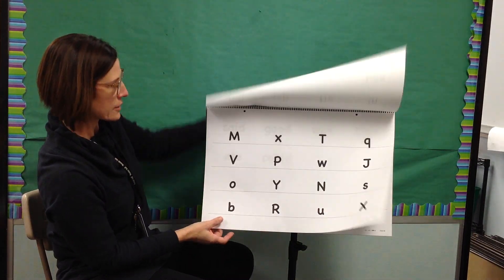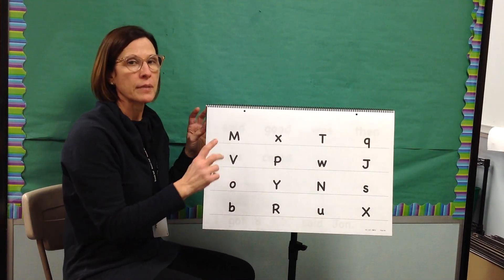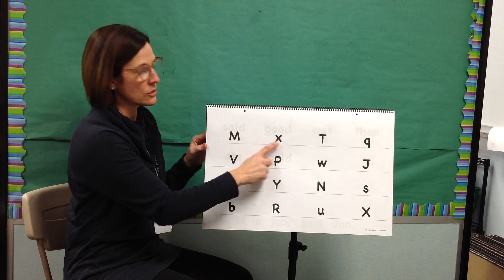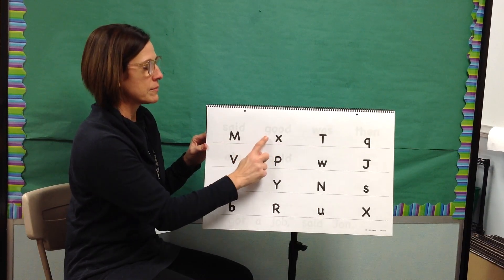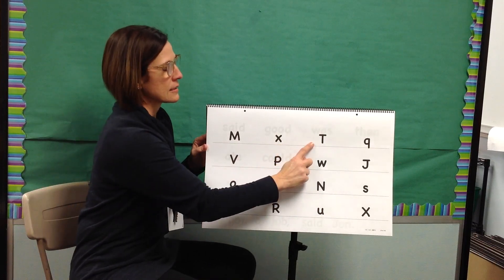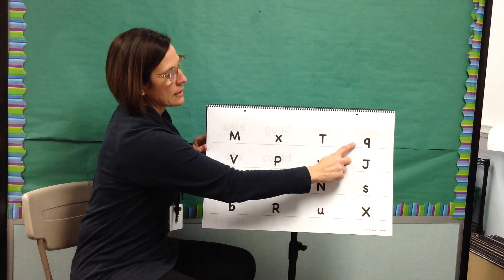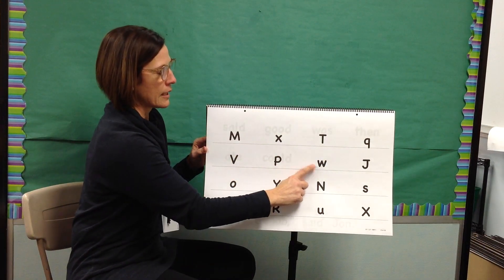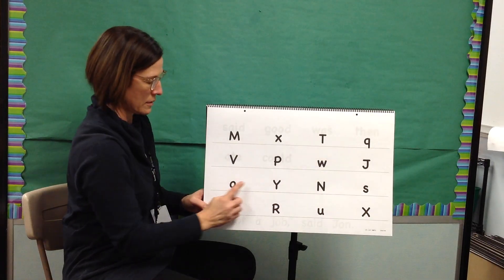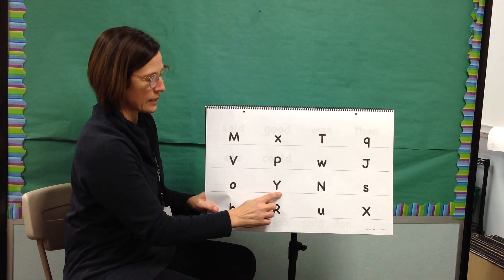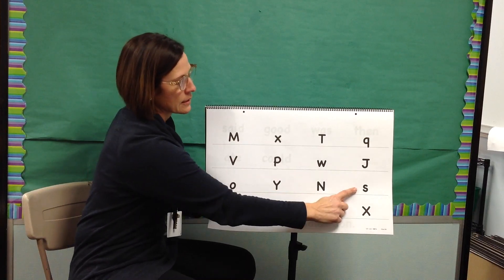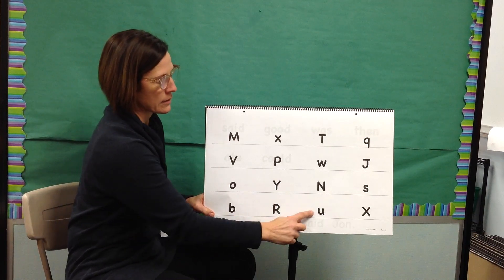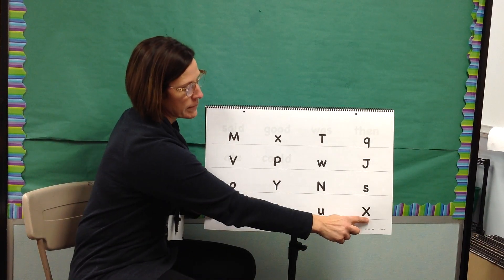Next we will look at some letters and we will say the name for each letter. I will model the first two. My turn. Name: M. Name: X. Your turn. Name: M. Yes, M. Name: X. Yes, X. Name: T. Name: Q. Name: V. Name: P. Name: W. Name: J. Name: O. Name: Y. Name: N. Name: S. Name: B. Name: R. Name: U. Name: X. Yes, X.